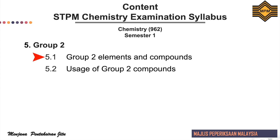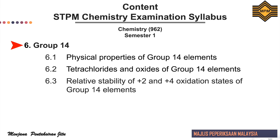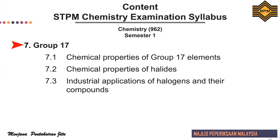Topic 5 is about group 2, where the subtopics cover 5.1 group 2 elements and compounds, and 5.2 usage of group 2 compounds. For Topic 6, which is group 14, the topic covers: 6.1 physical properties of group 14 elements, 6.2 tetrachloride and oxides of group 14 elements, and 6.3 relative stability of +2 and +4 oxidation states of group 14 elements.